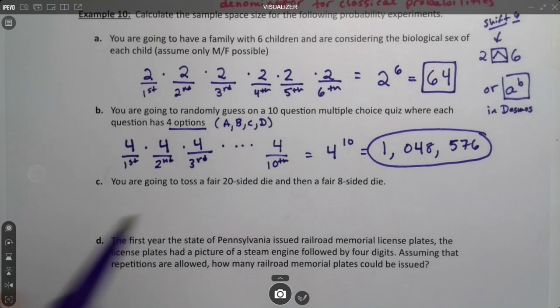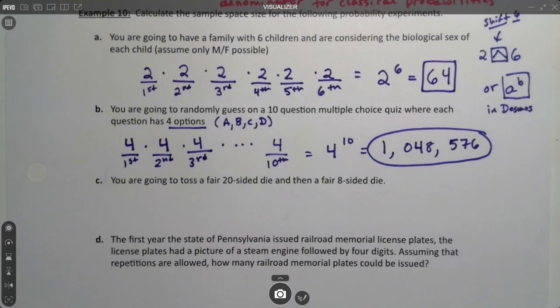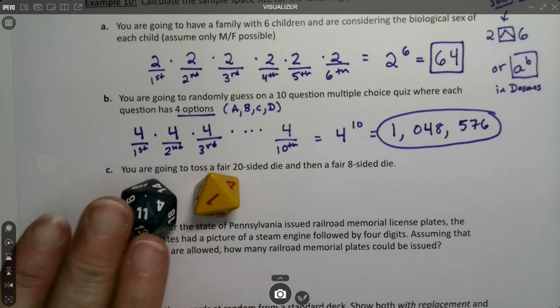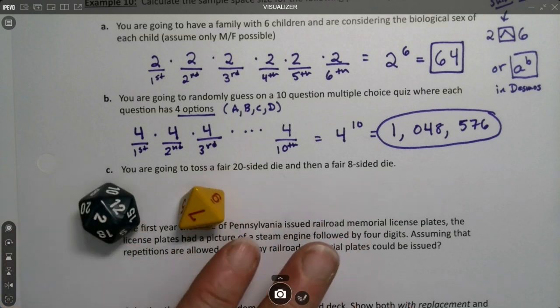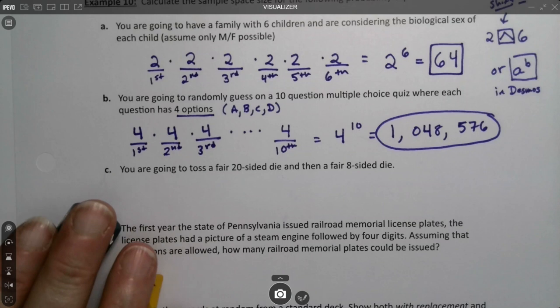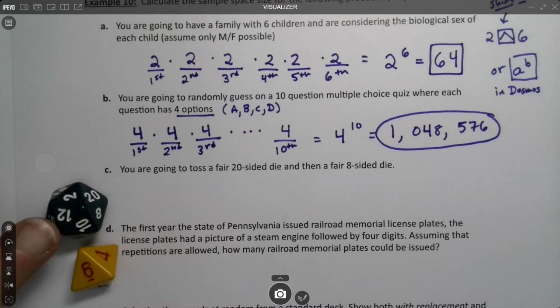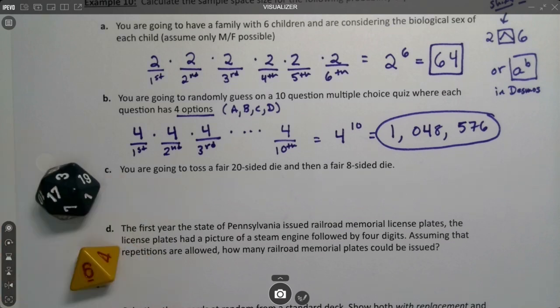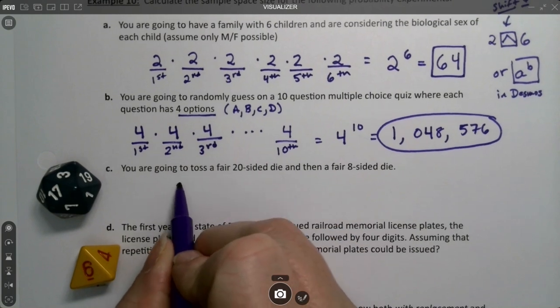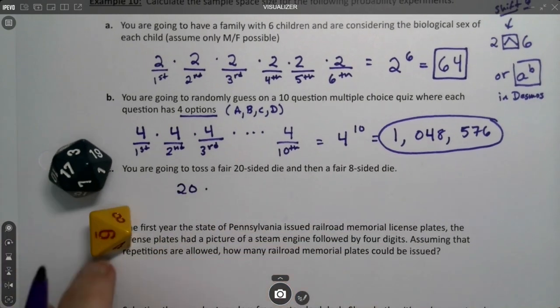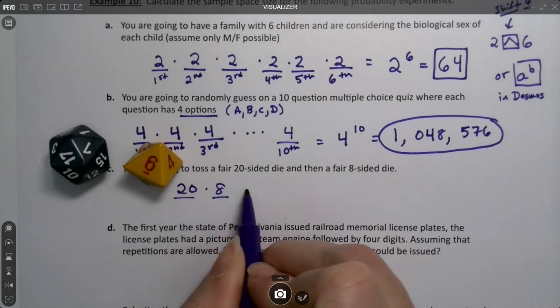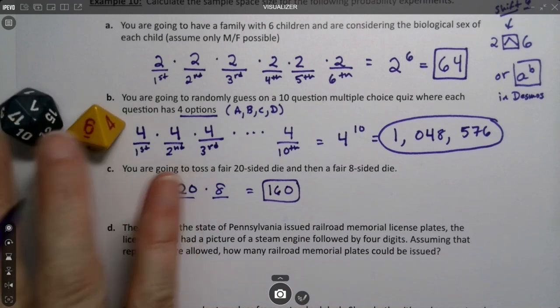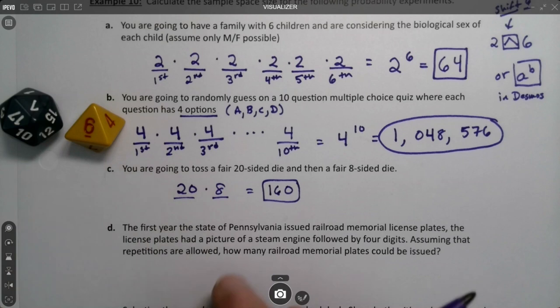Now what about a fair 20 sided die and a fair eight sided die? The 20 sided die is famous for role playing games like Dungeons and Dragons. The 20 sided die would be 20, there's 20 options for that die. There's 8 options for this die. So 20 times 8 would be 160. Again, this is not a probability we're finding, but now we know the chance of a 17 and a 6 would be 1 out of 160.